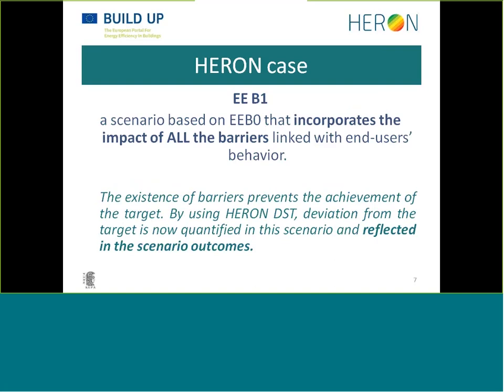The first scenario developed in IRON was named Energy Efficiency Building 1, or EEB1. It was based on the same assumptions as EEB0, only this one was taking into consideration the impact caused by all the barriers, without minimizing any of them. As you can understand, it was not a very happy scenario — it was more like a Cassandra. We are doomed.